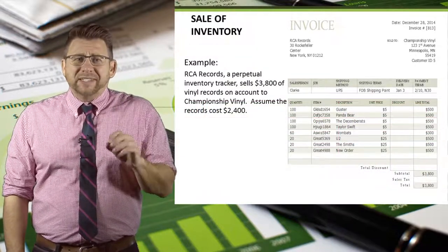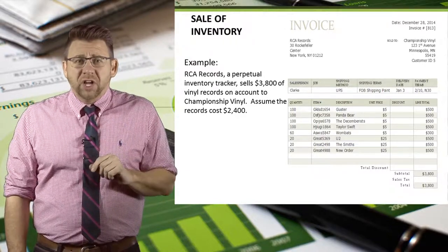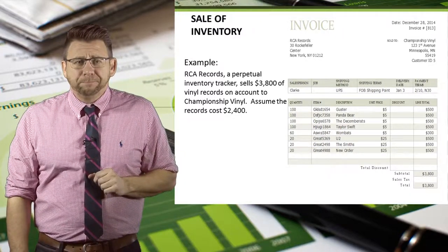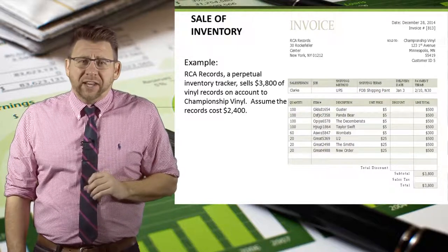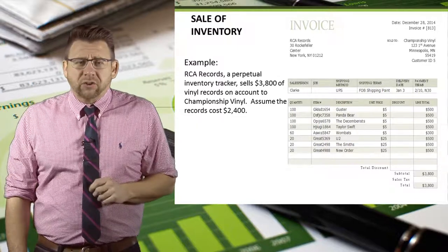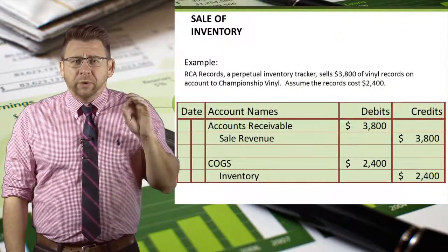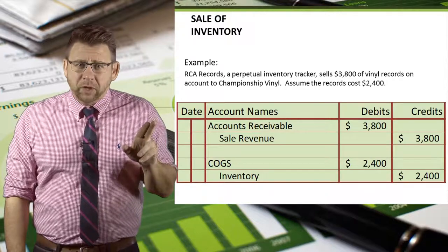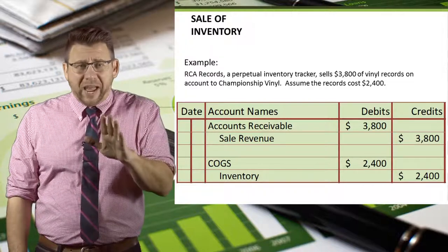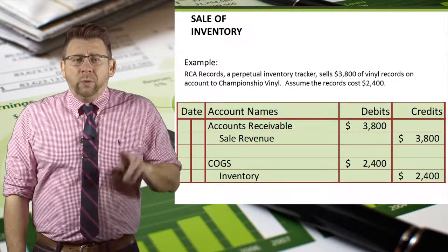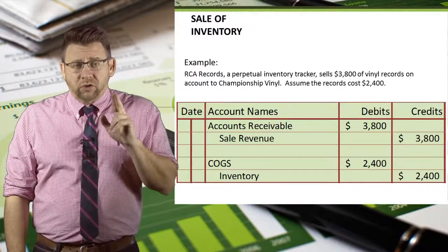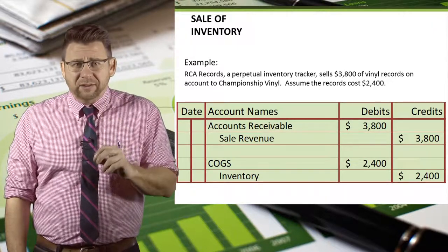Let's look at the same example we saw as a buyer of goods, only this time we'll record the transactions as the seller, RCA Records. RCA Records sells $3,800 of vinyl records to Championship Vinyl. Let's assume the cost of those records were $2,400. We would record a debit to accounts receivable and a credit to sales revenue for $3,800, which was the price the records sold for. We would also record a debit to cost of goods sold and a credit to inventory for $2,400, which was the cost of the records.